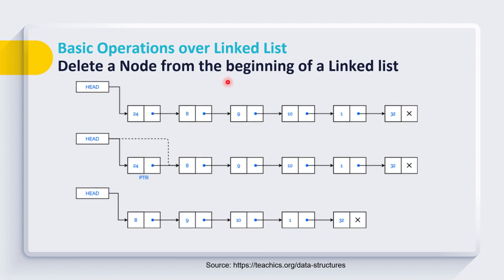We can also delete a node from the beginning of a linked list. Here we are modifying the address of the head node — earlier it was pointing to the first node but now it is pointing to the second node — and this way we can remove a node from the beginning of a linked list.